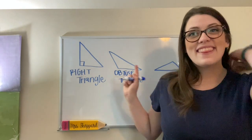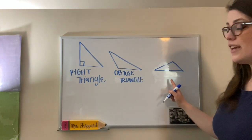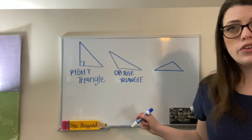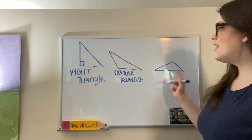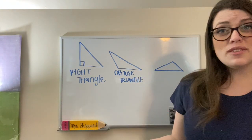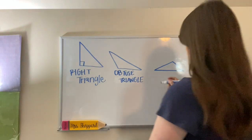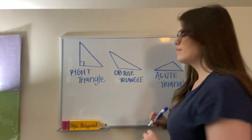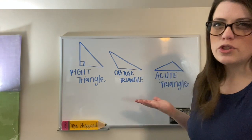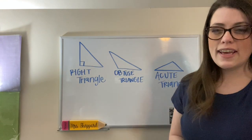And finally, this triangle right here has all acute angles. This triangle is called an acute triangle. So this is how we label triangles based on their angles.